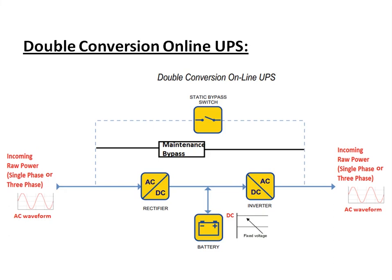The name 'double conversion' itself indicates there are two conversions. The incoming AC power is fed to a rectifier which converts AC to DC, used for charging the battery, and at the same time the DC is converted back to AC and fed to the output. The AC is always fed to the rectifier, and the inverter is always in operation — one conversion is AC to DC, and the other is DC to AC.